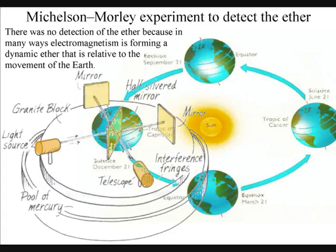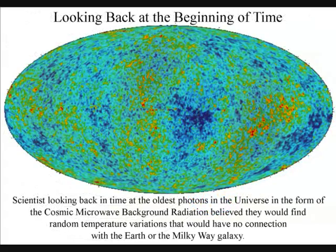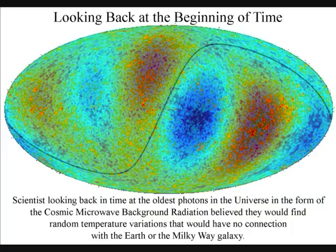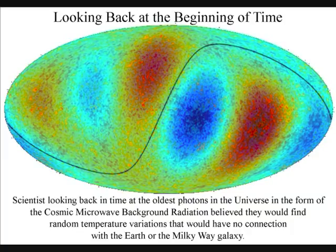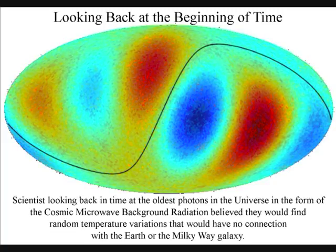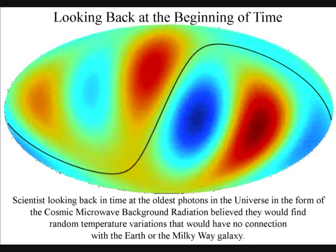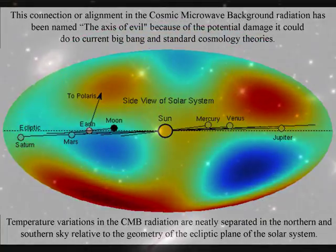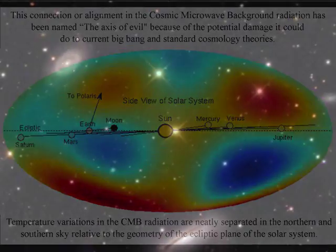This could also explain why scientists have found an axis in the cosmic microwave background radiation that runs back through space and time, that is relative to the elliptical plane of our solar system and the local group of galaxies that include the Milky Way galaxy.